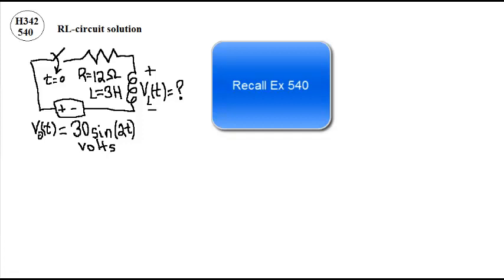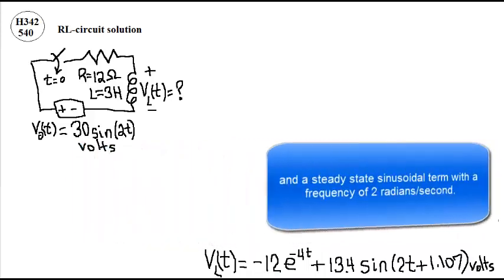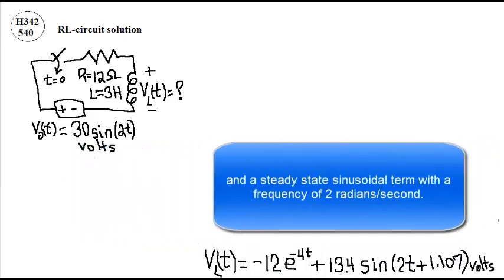Recall exercise 540, where we determined the voltage across the inductor as a function of time after switch closure. There is a transient term with a time constant of a quarter of a second, and a steady state sinusoidal term with a frequency of two radians per second.